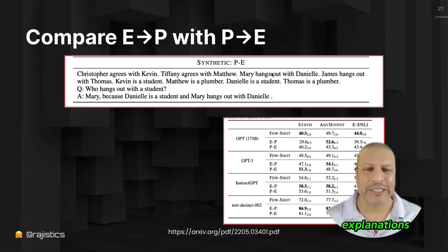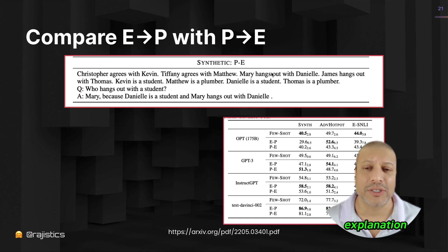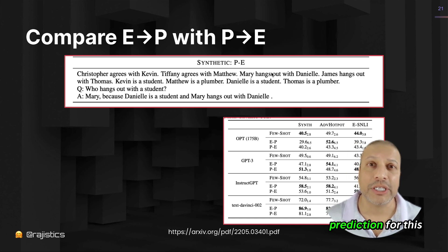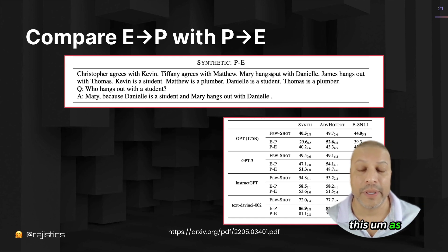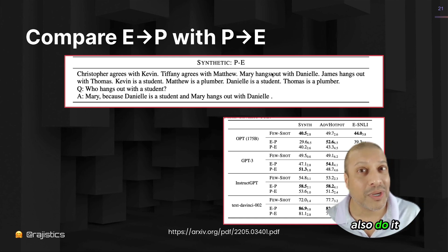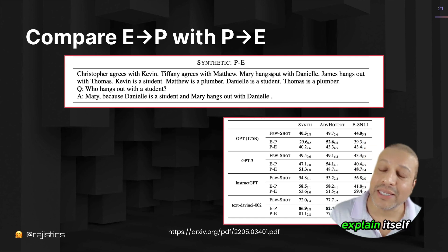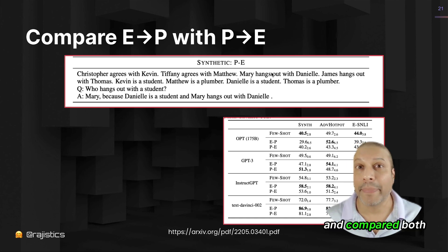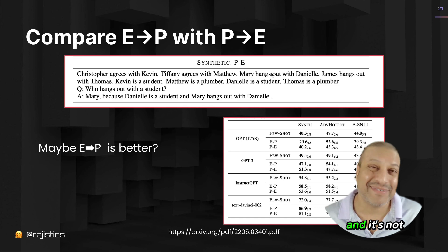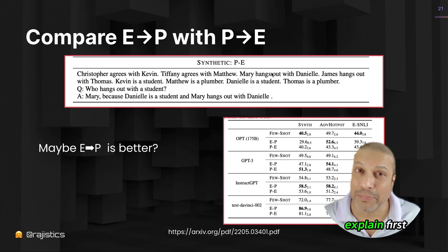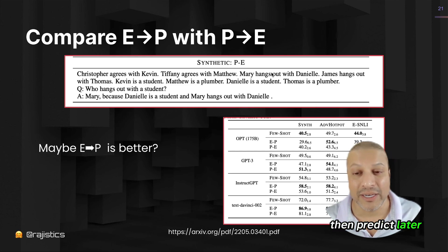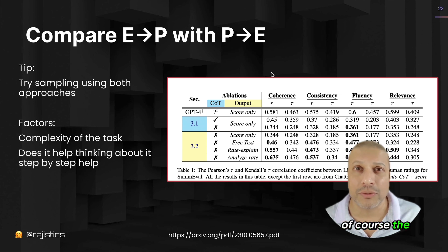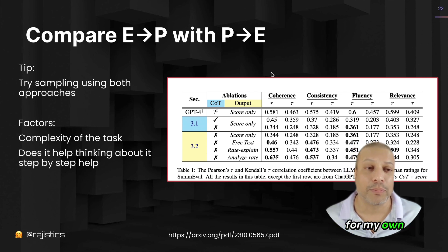The third thing is getting these explanations. You might think it's pretty easy — you just ask the model for a prediction and ask it to explain as well. But you could also do it the other way: ask the model to explain itself first and then get the prediction. Some research has dug into this and compared both methods, and it's not really clear. Looking at the results, maybe it's better to explain first and then predict later, but it's not clear across the studies I've seen or from my own personal research.